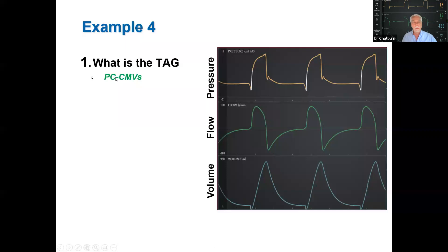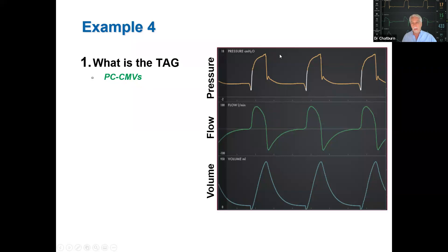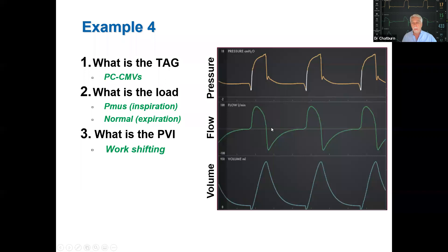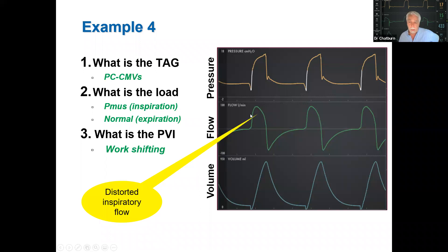Example four: pressure control, continuous mandatory ventilation — recognized from the waveform. Ventilators are not as good at controlling pressure as flow, so you will see some distortion of the pressure waveform if the patient makes inspiratory efforts. The load shows muscle pressure during inspiration — increased over what we'd expect for an exponential decay — while expiration shows a normal exponential decay. We call this work shifting because of the distorted inspiratory flow and augmented tidal volume. In such a situation, you might get an excessive tidal volume above a safe limit of 6–8 mL/kg.